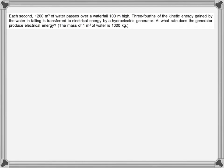The problem says that each second 1200 meter cube of water passes over a waterfall which is 100 meter high. So this is the waterfall and this is below and this height is 100 meter. And the amount of water, the volume of water that passes here and falls below is 1200 meter cube.